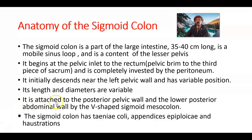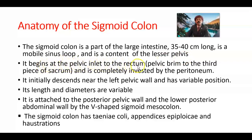The sigmoid colon is a part of the large intestine. It is about 35 to 40 centimeters long in an adult person. This is a mobile sinuous loop, so it is called the sigmoid colon. It is a content of the lesser pelvis, or true pelvis, and is completely invested by the peritoneum, making it an intraperitoneal structure.